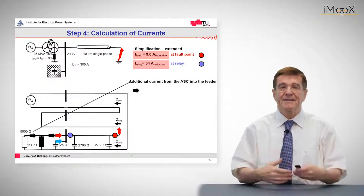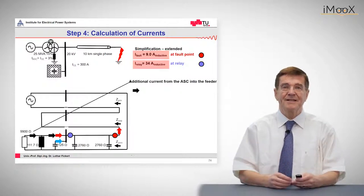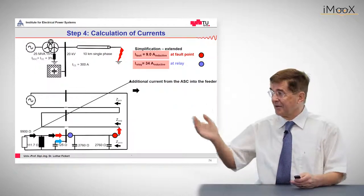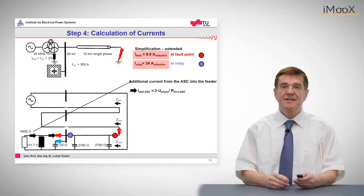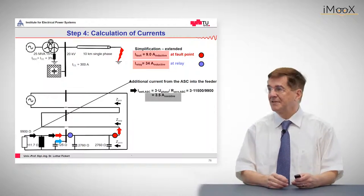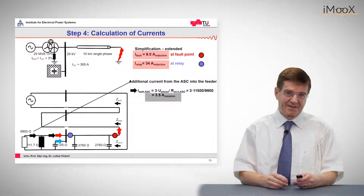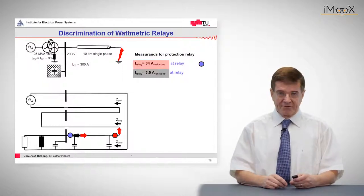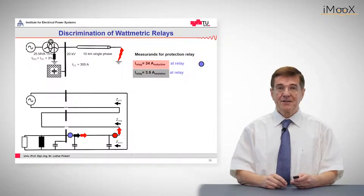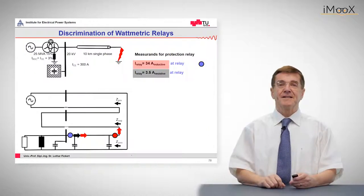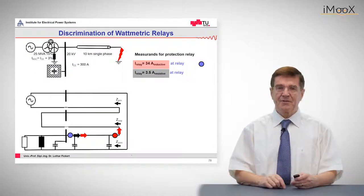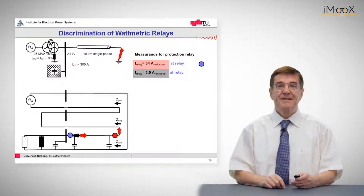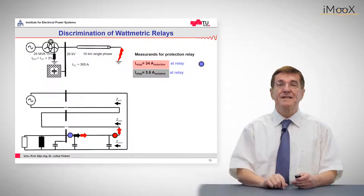And we should add now this normally neglected resistive current, the wattmetric current, which is given by the losses of the arc suppression coil, that comes out as 3.5 amps in the zero sequence system. So as it was shown, the protection relay at the bus bar, looking into the feeder, sees a reactive current of inductive type of 34 amps and a resistive current of 3.5 amps. And the resistive current is the decisive one.